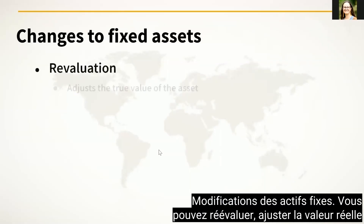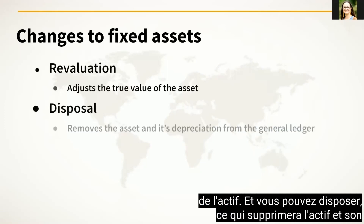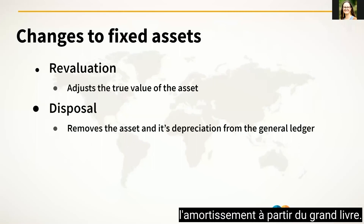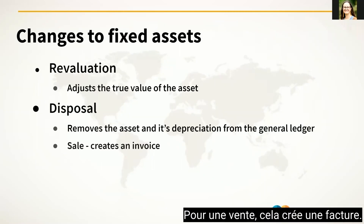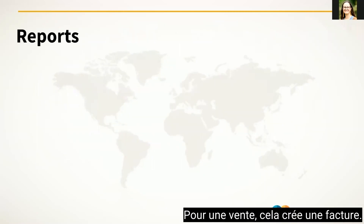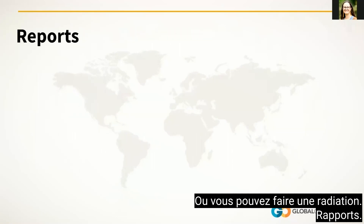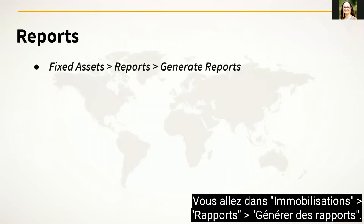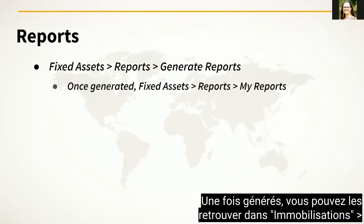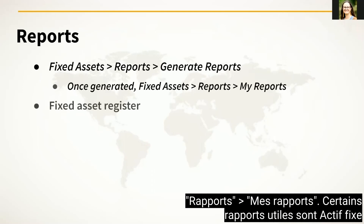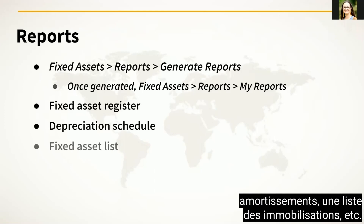Changes to fixed assets: you can revalue, adjusting the true value of the asset, and you can dispose, which will remove the asset and its depreciation from the general ledger. For a sale it creates an invoice, or you can do a write-off. For reports, you go to Fixed Assets, Reports, Generate Reports. Once generated, you can find them in Fixed Assets, Reports, My Reports. Some helpful reports are Fixed Asset Register, Depreciation Schedule, and Fixed Asset List.